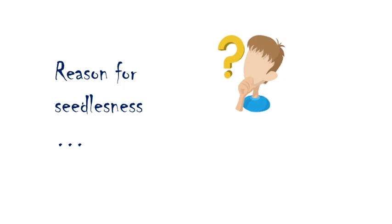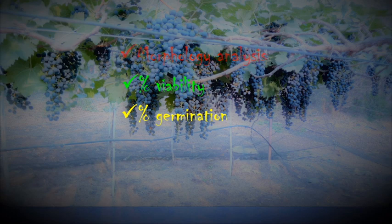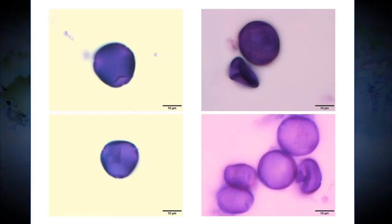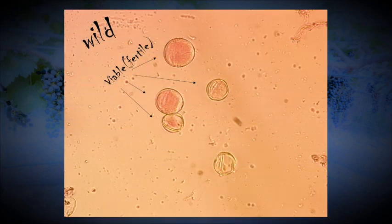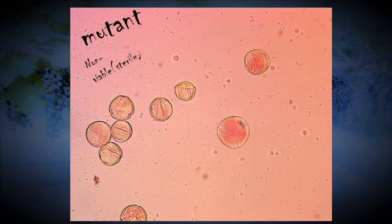For that, we analyzed the morphology, viability, and germination of pollen grains. First, we performed a viability test, staining the pollen grains using Acetocarmine stain. We observed that the viability of pollen grains in the wild type was higher compared to the mutant.